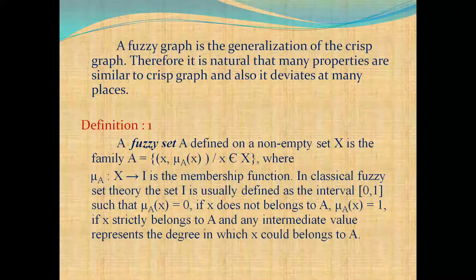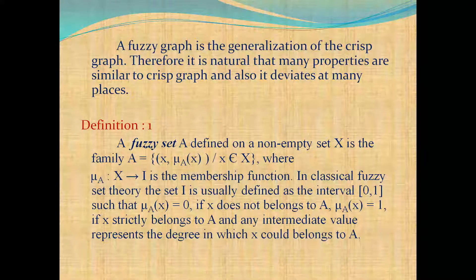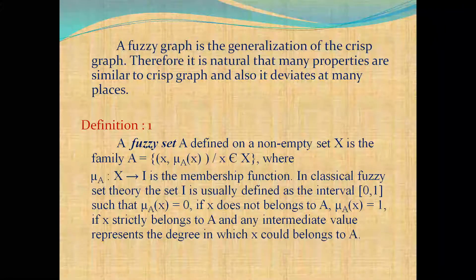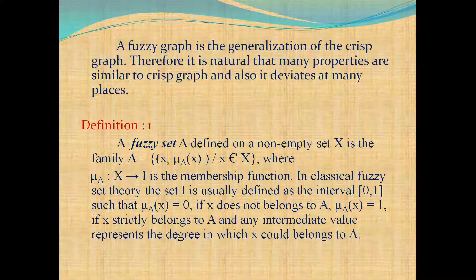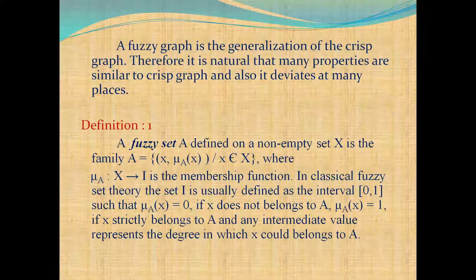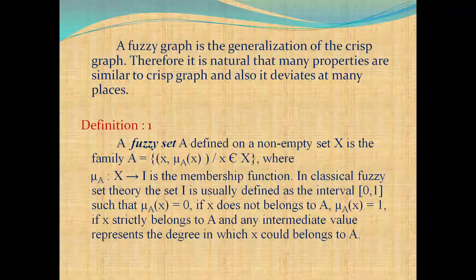Definition: A fuzzy set A defined on a non-empty set X is the family A = {(x, μ_A(x)) / x ∈ X}, where μ_A: X → I is the membership function. In classical fuzzy set theory, the set I is usually defined as the interval [0,1]